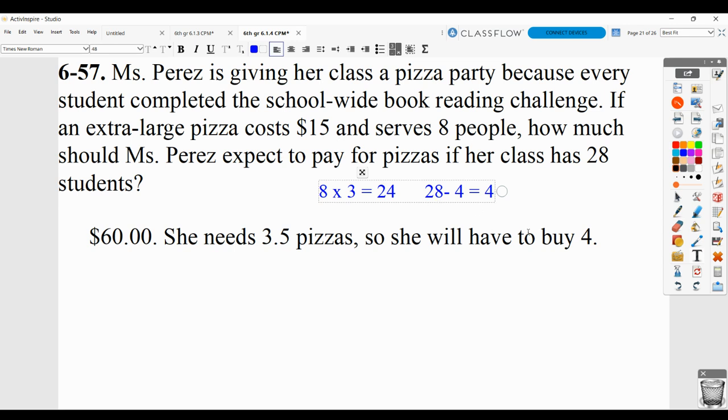Okay, another way you could have done it is you could have taken 28 divided by eight. And you would see that you would get the decimal three and five tenths or three and a half as a mixed number. But again, we know that we can't buy a partial pizza. Round up to four and then multiply by $15 per pizza.